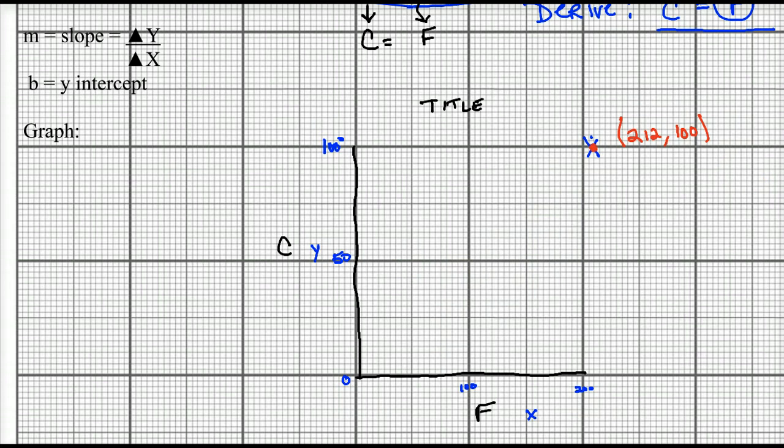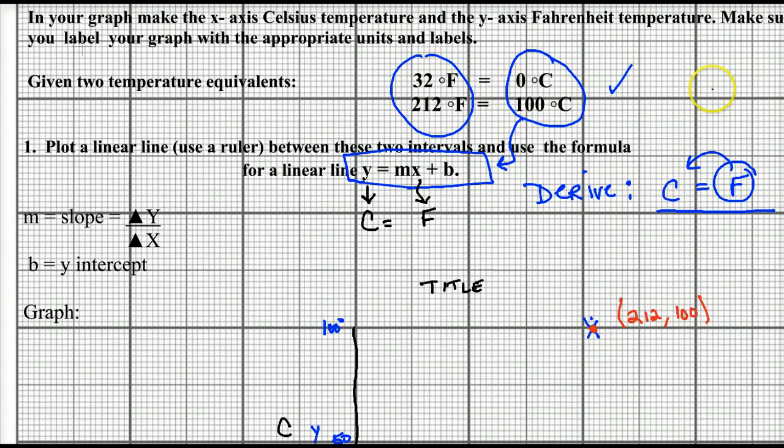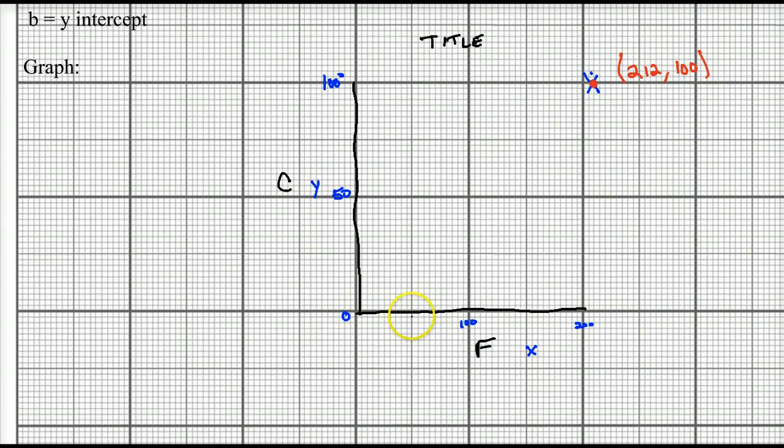Next data point, or next equivalent that we have is that at 32 degrees Fahrenheit, there's 0 degrees Celsius. So 32 degrees Fahrenheit, it's 50, so 32 would be somewhere here. At 32 degrees Fahrenheit, there's 0 degrees Celsius. So this would be (32, 0), x and y. And that's my other data point.